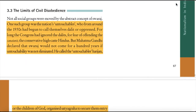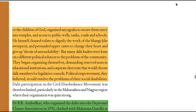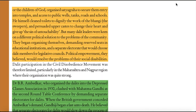The Limits of Civil Disobedience. Not all social groups were moved by the abstract concept of Swaraj. One such group was the nation's untouchables, who from around the 1930s had begun to call themselves Dalit, or oppressed. For long, the Congress had ignored the Dalits for fear of offending the Sanatanis — the conservative high-caste Hindus. But Mahatma Gandhi declared that Swaraj would not come for a hundred years if untouchability was not eliminated. He called the untouchables Harijan — children of God — organized Satyagraha to secure them entry into temples and access to public wells, tanks, roads and schools, and himself cleaned toilets to dignify the work of the sweepers.